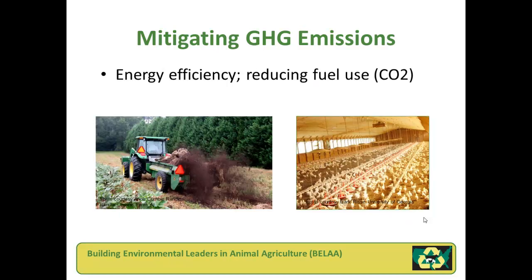Reducing fuel and electricity use on farms not only reduces greenhouse gas emissions but should also have a positive impact on the economic bottom line. This might be the lowest item on the mitigation list, but it's certainly one of the easiest and most cost-effective to implement. Examples include switching to no-till or reduced tillage, insulating buildings, using energy-efficient light fixtures, utilizing natural light in buildings, or optimizing irrigation water use.